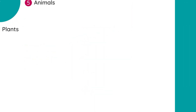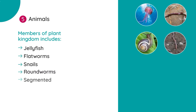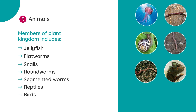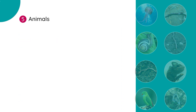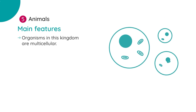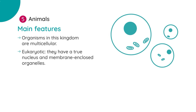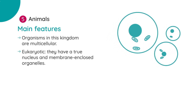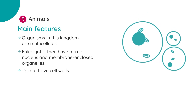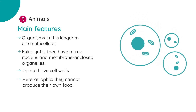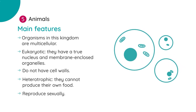The animal kingdom includes jellyfish, flatworms, snails, roundworms, segmented worms, reptiles, birds, and mammals which includes us as humans. Main features include: all organisms in this kingdom are multicellular; they are eukaryotic meaning they have a true nucleus and membrane-enclosed organelles; animal cells do not have cell walls; all animals are heterotrophic, they cannot produce their own food; and animals normally reproduce sexually.